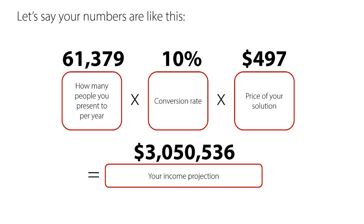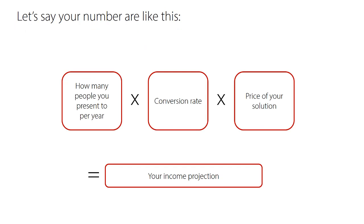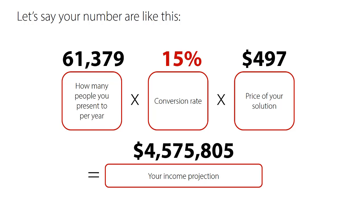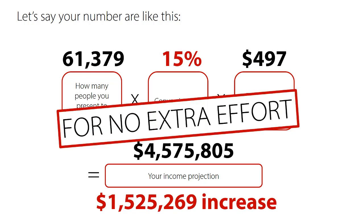Three million dollars — and this could all happen very quickly when you're using the power of compounding because you're reinvesting straight away. If you do nothing more than improve your conversion rate from 10% to 15% using some techniques I can teach you, here's how it changes your numbers: 60-odd thousand people going into the presentation, conversion rate goes from 10% to 15%, price stays the same, and now you're at four and a half million dollars. That's a $1.5 million increase in income for no extra effort — same presentation, same amount of time, just a higher number of people and an improved conversion rate.